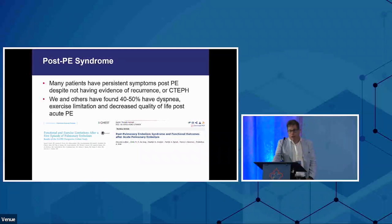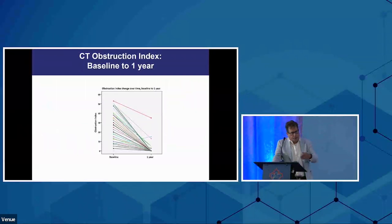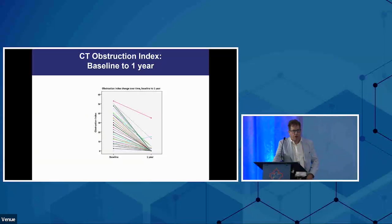We found that one year later — in mainly healthy people — half were still dyspneic, half had decreased quality of life, and half had abnormalities on the VQ scan, although the correlation between obstruction and symptoms was not very strong. They did not return completely to normal. Groups in the Netherlands subsequently showed similar findings: most CT scans improved greatly, but a number did not. VQ scanning tended to show even more abnormalities than CT.